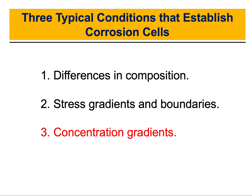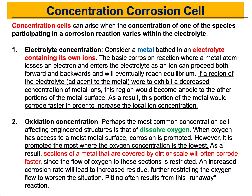Dear students, welcome and thank you for tuning in. This is another video about corrosion, which is part of the biomaterials class. In this video we are going to continue our discussion about the different conditions that establish corrosion cells, and we're going to discuss the conditions that result in corrosion because of something called the concentration gradient. We will define what the concentration gradient is, how it works, and what types of corrosion cells can result from it.